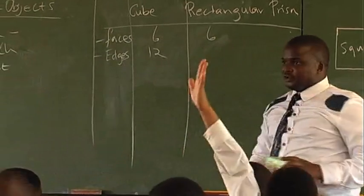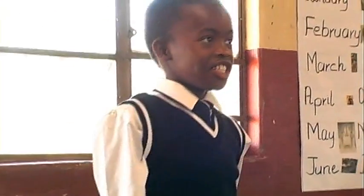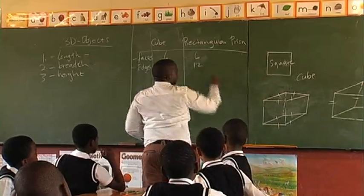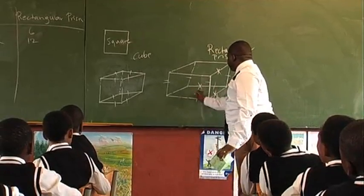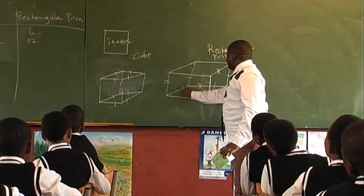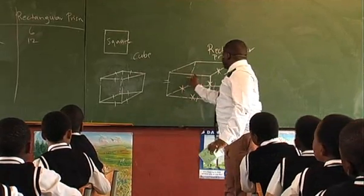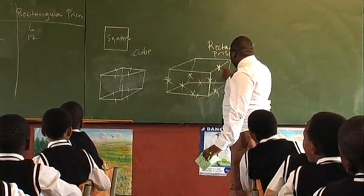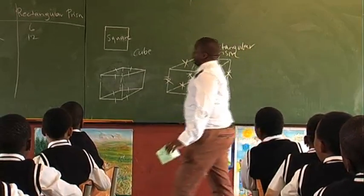Then the rectangular prism — there are 12 edges. Twelve edges. Let us count them: 1, 2, 3, 4, 5, 6, 7, 8, 9, 10, 11, 12. Yes.